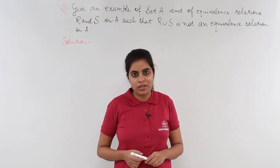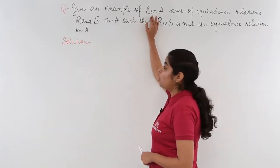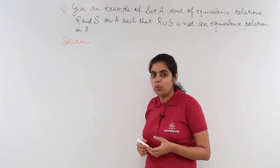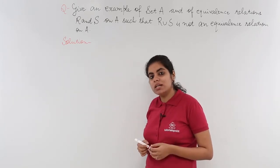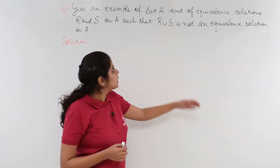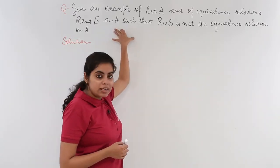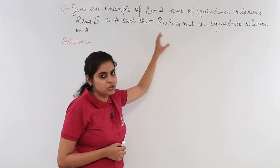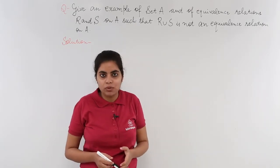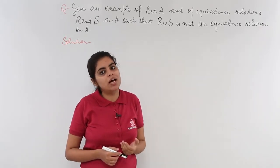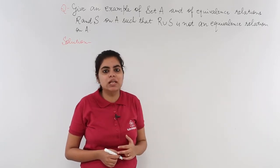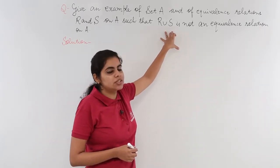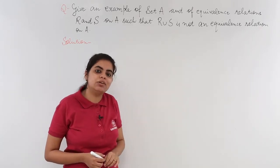Let's get started by reading the question. Give an example of a set A of equivalence relations R and S on A such that R union S is not an equivalence relation on A. The problem asks me to write down one set A, two equivalence relations R and S, such that their union should not be an equivalence relation.